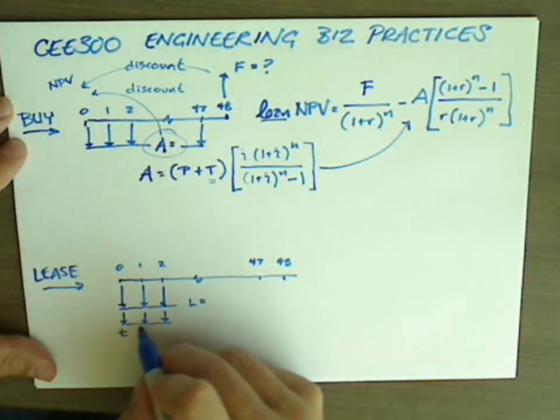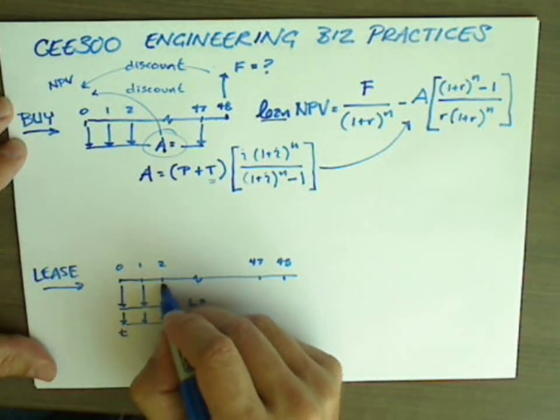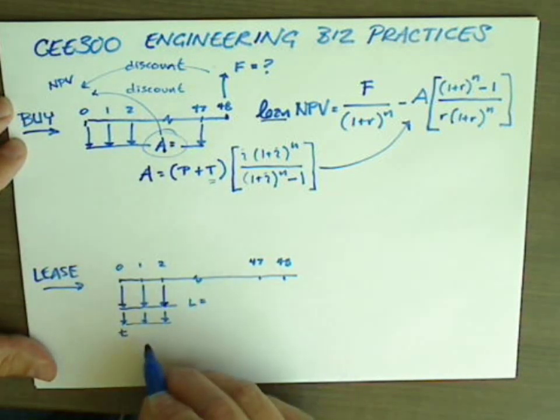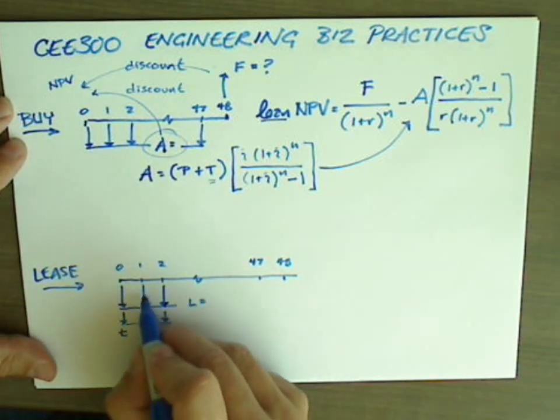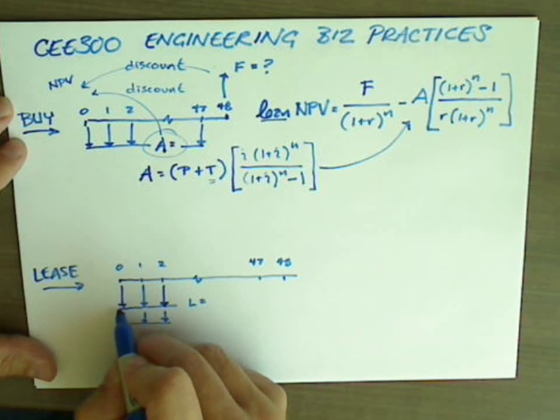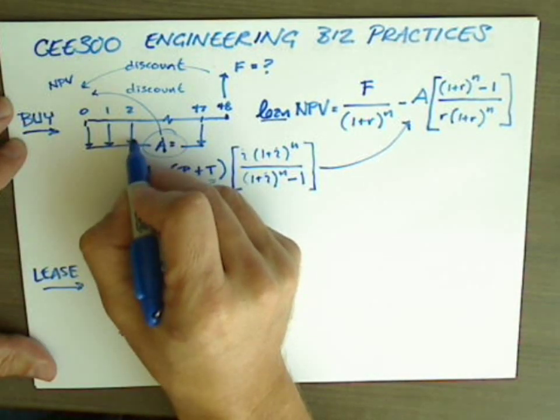Now, this could be sales tax, excise tax, use tax, but the key is that you have lower monthly payments compared to the monthly payments here.